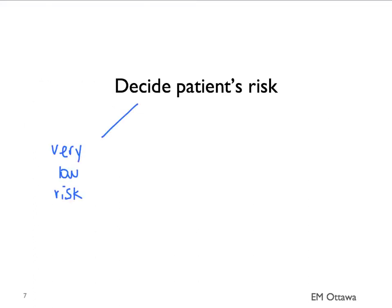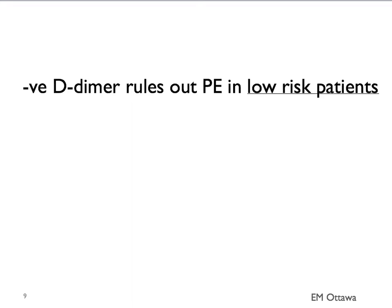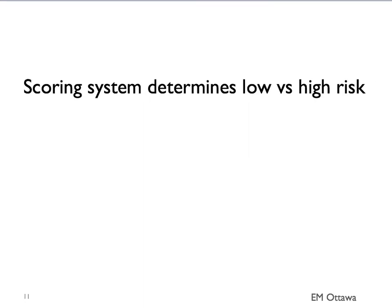Now that we know what to do with the very low risk patient, let's turn our attention to low risk and high risk patients. Once we divide the patient into low risk or high risk categories, we can decide to use the D-dimer to rule out PE in patients who are low risk. A negative D-dimer will rule out PE in patients who have low risk. The question is therefore: who are our low risk patients?